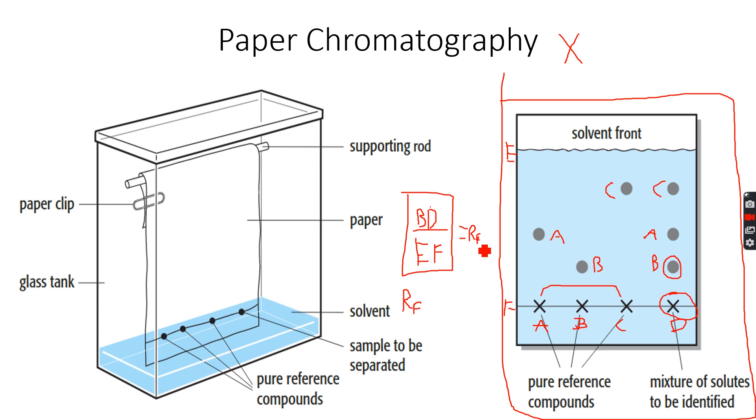For a particular solvent, for example X, the RF value of B will always have a constant value. That means whenever you are carrying out chromatography with X and one of the components is solute B, then it will have the same RF value in any case—but the solvent has to be same. If we have another solvent Y, then the RF value will be different. If we have another solvent Z, then again it will be different.